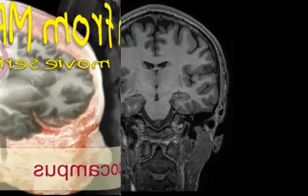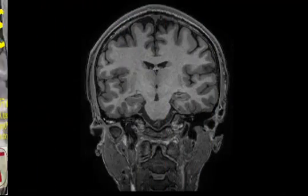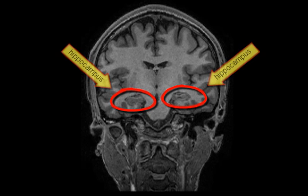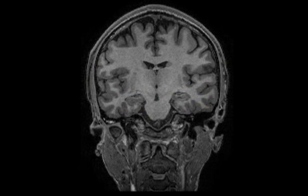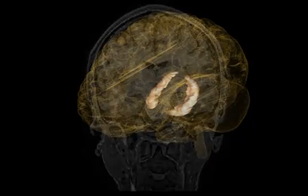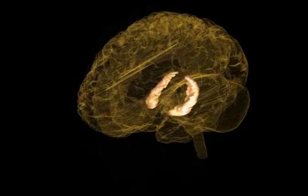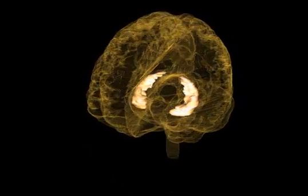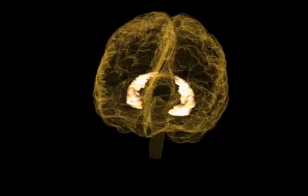The medial wall of the temporal lobe in each of the cerebral hemispheres contains an elongated structure, the hippocampus. Its dimensions are about the same as that of your little finger.